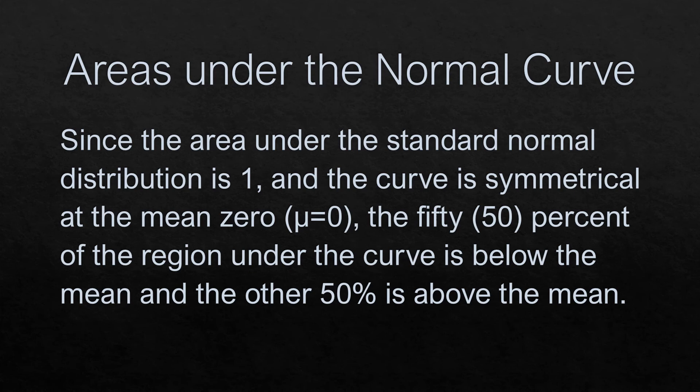Since the area under the standard normal distribution is 1 and the curve is symmetrical at the mean 0, the 50% of the region under the curve is below the mean and the 50% or the other 50% is above the mean.